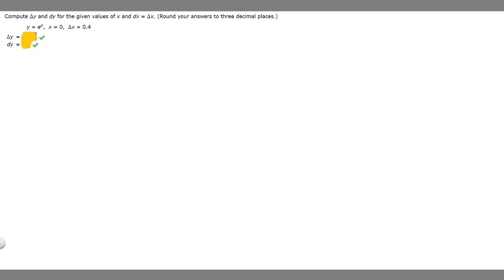In this problem we're told to compute delta y and dy for the given values of x and dx equals delta x. It says round your answers to three decimal places.